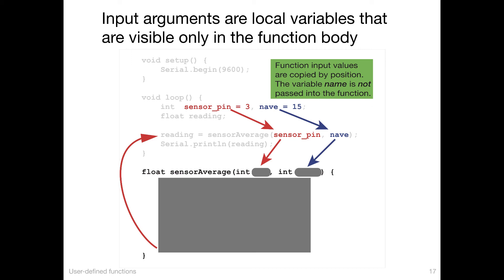Similarly, the internal name that's computed as the average doesn't matter. That value is passed back to the calling statement.